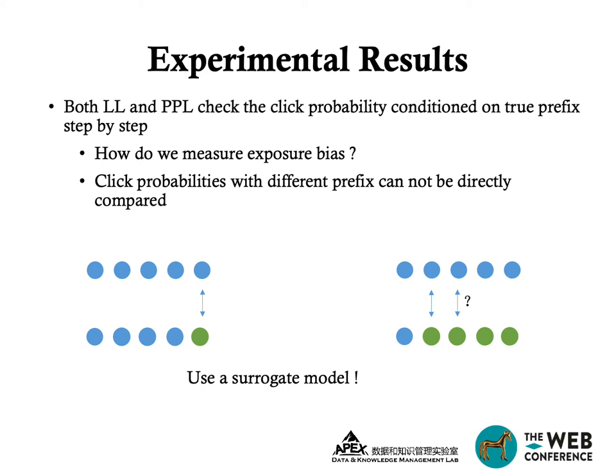However, we find that both log likelihood and perplexity check click probability conditioned on the true prefix step by step, which means they cannot measure exposure bias. So how do we measure exposure bias? It is difficult, since we cannot directly compare two click probabilities with different prefixes.